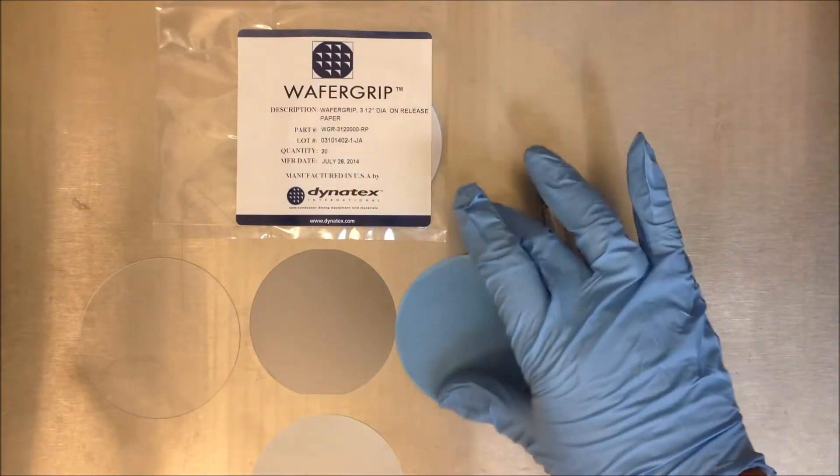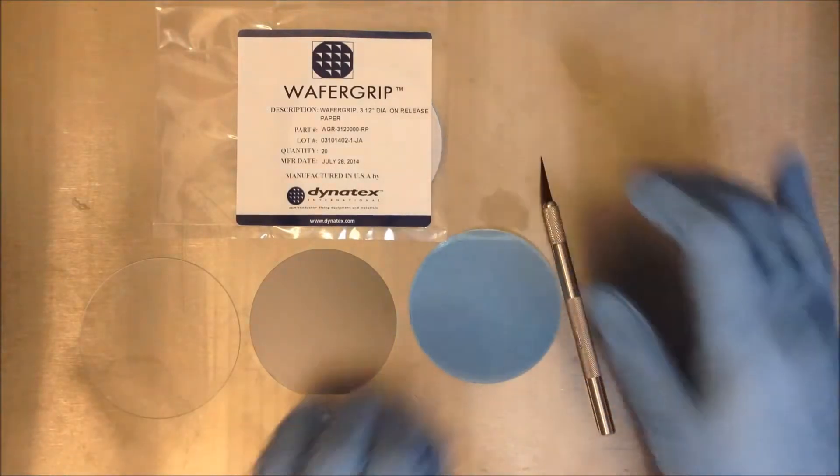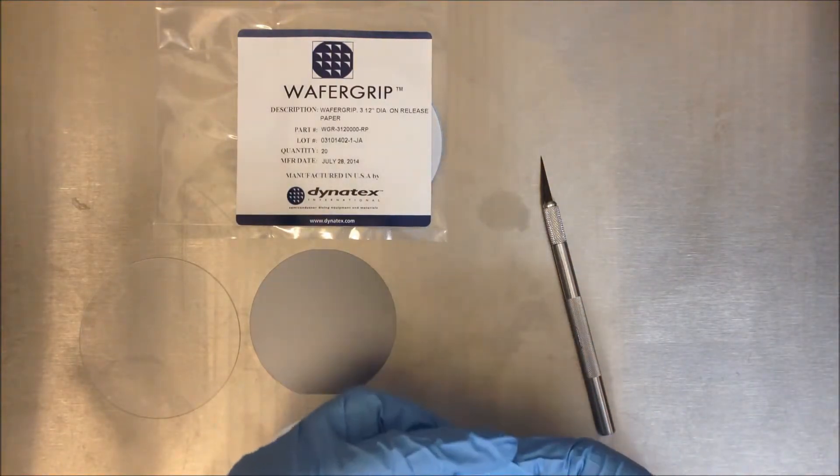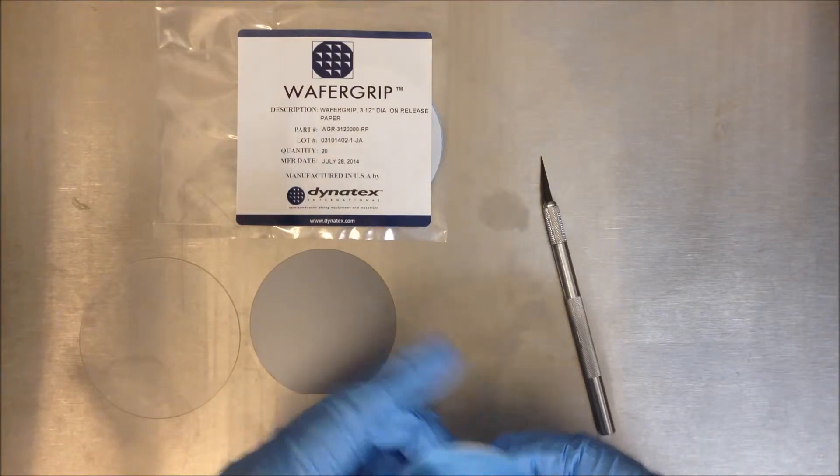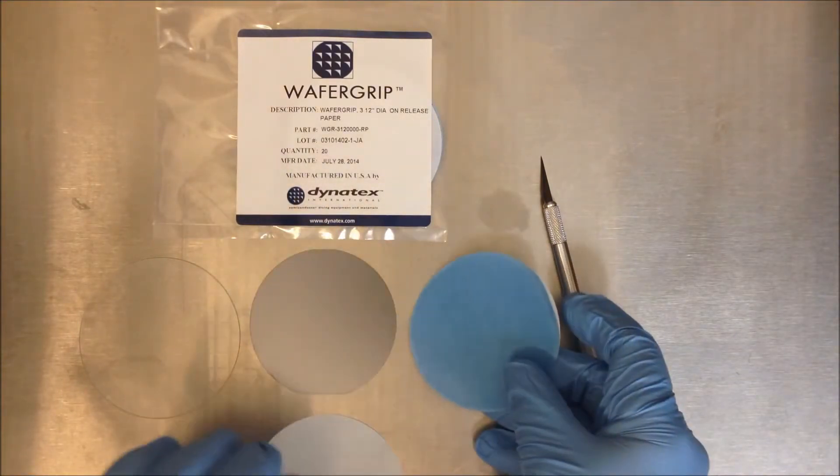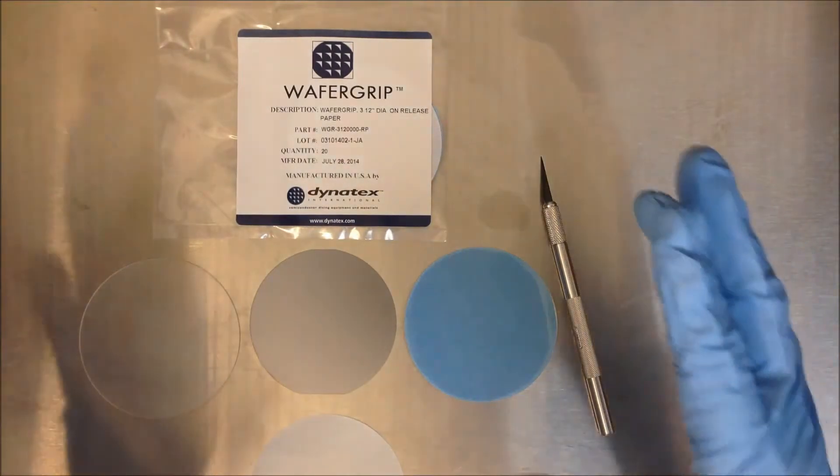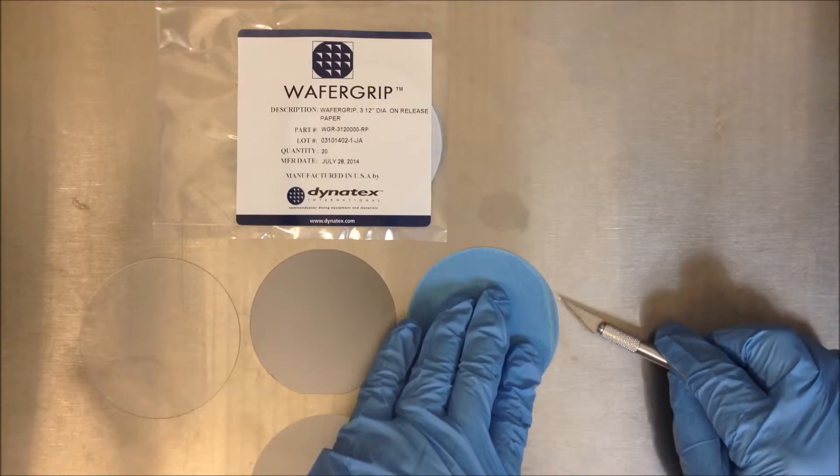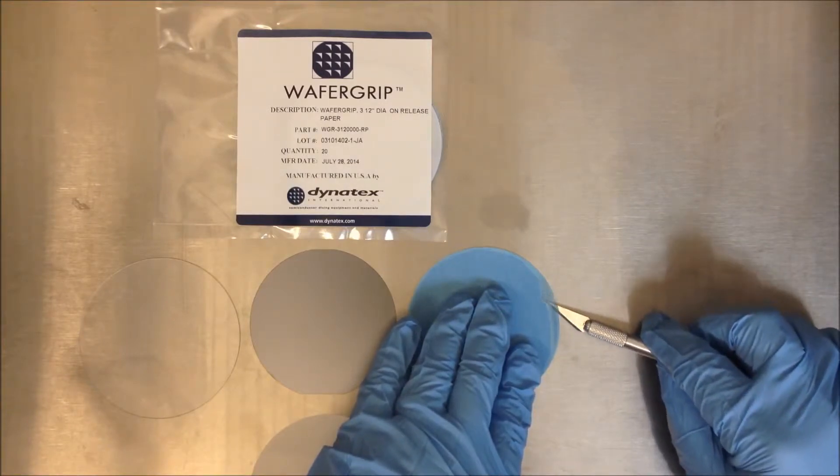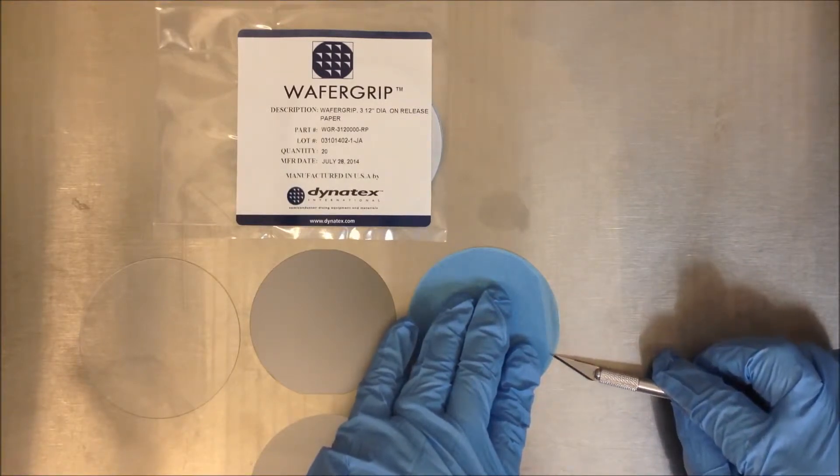Step one is to take a piece of wafer grip and gradually raise the edge by rubbing it with your finger like so. Now this isn't enough to get a hold of it very easily with a gloved hand, so I now use the scalpel to ease it away from the paper just a little more.